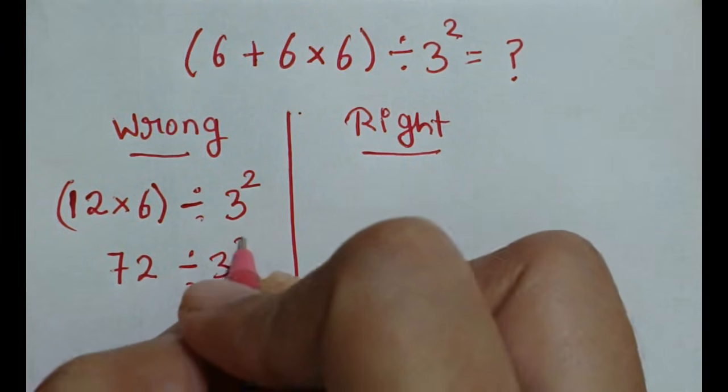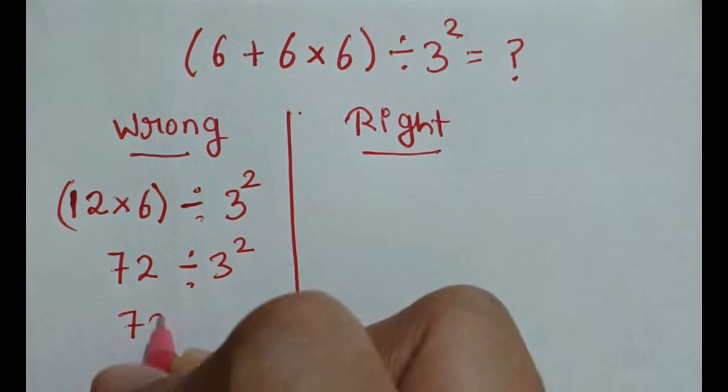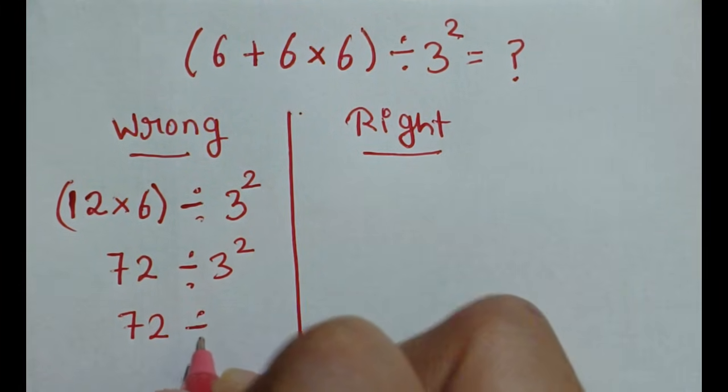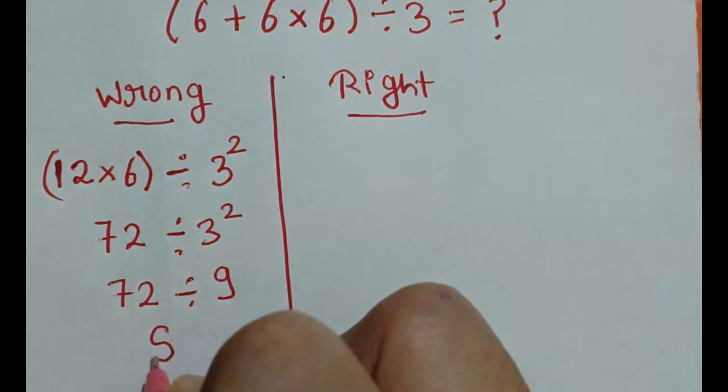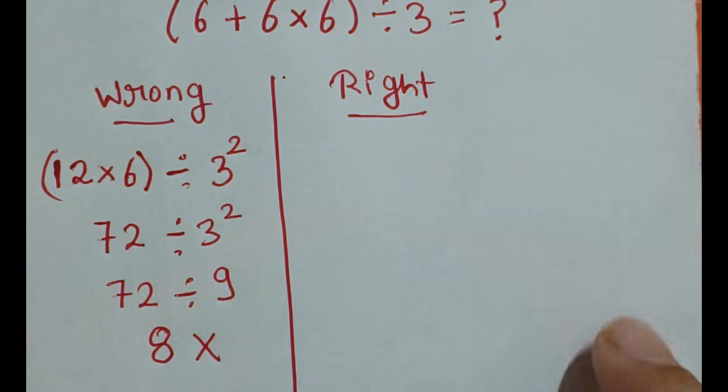Divide by 3 square. Then 72 divide by 3 square, 9. So here 8 will come, which is the wrong value for this expression.